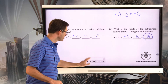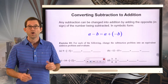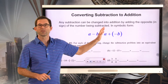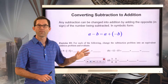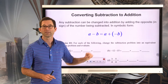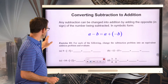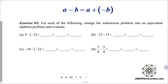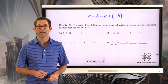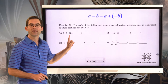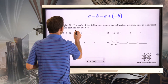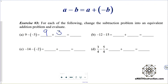Converting subtraction into addition: any subtraction can be changed into addition by adding the opposite of the number being subtracted. In symbolic form, a minus b is equal to a plus negative b. Exercise 3: for each of the following, change the subtraction problem into an equivalent addition problem and evaluate. So 9 minus negative 3 will be the same as 9 plus positive 3 — so 9 minus negative 3 is 12.